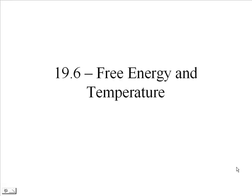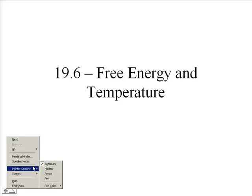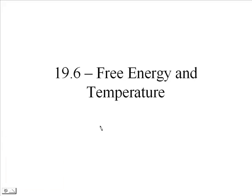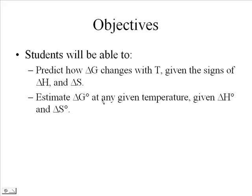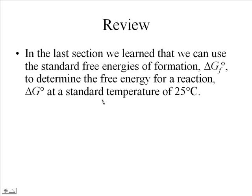This is section 19.6, free energy and temperature. We're going to be using the delta G equals delta H minus T delta S equation quite a bit. We'll be talking about how the delta G value is related to temperature, and our objectives are to see how delta G changes with temperature and to find delta G at any given temperature when we know delta H and delta S.